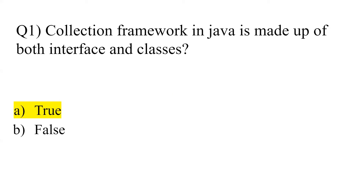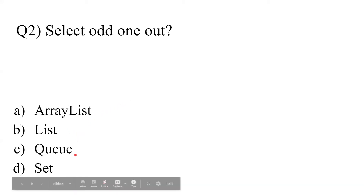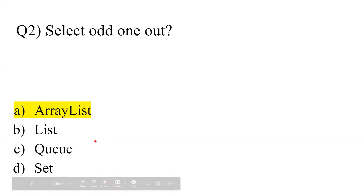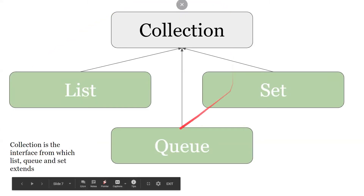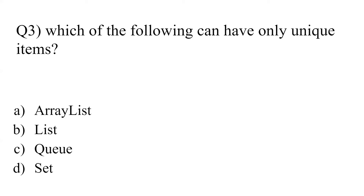Question 2: 'Select the odd one out' — options are ArrayList, List, Queue, and Set. The odd one out is ArrayList. List, Queue, and Set are interfaces which extend the collection framework, or we can say the Collection interface, whereas ArrayList is a class.